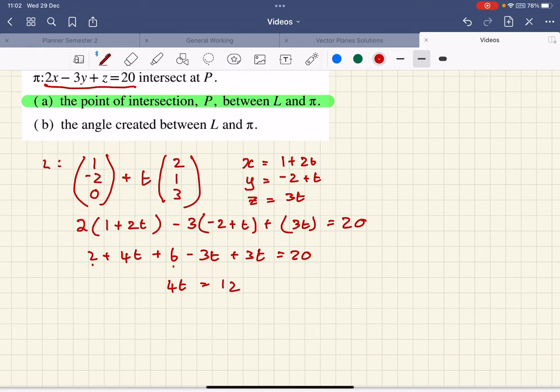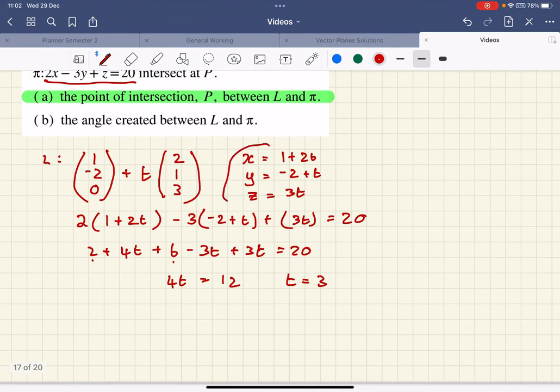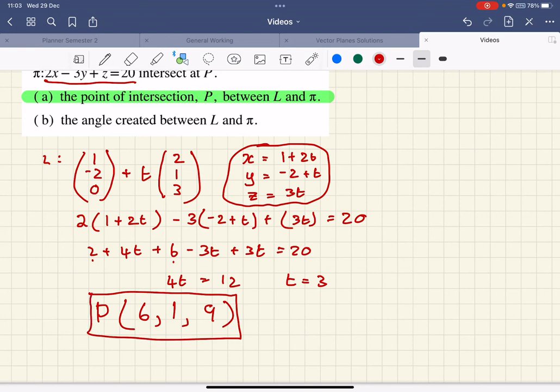So t is 3. If t is 3, we can go back up and work out each coordinate. The coordinate is 1 plus 2t which is 6, minus 2 plus 3 which is 1, and 3 times 3t which is 9. So there's my point. That's actually quite a straightforward calculation.